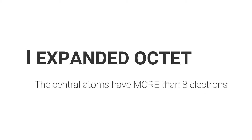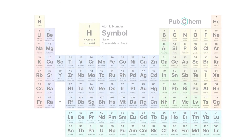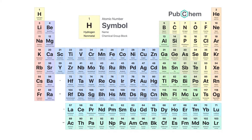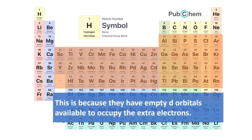Now let's have a look at the second exception to the octet rule, which is expanded octet. In this case, the central atoms have more than 8 electrons — some even have 10 or 12 valence electrons. This central atom usually comes from non-metals of period 3 and onwards.